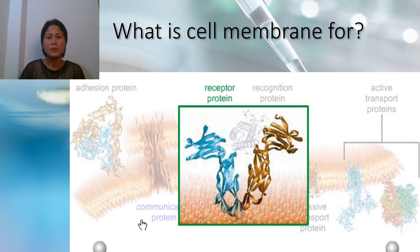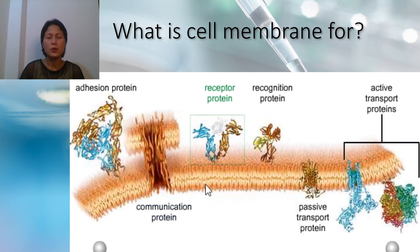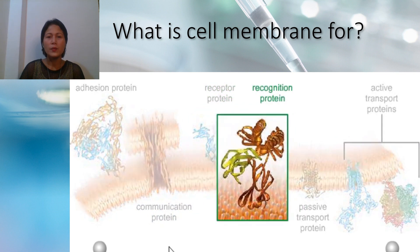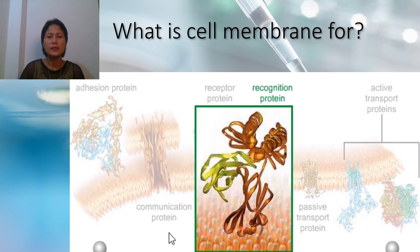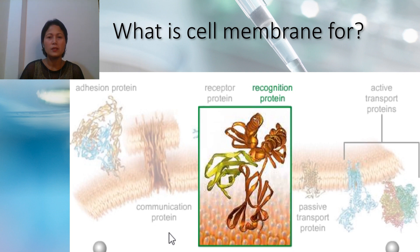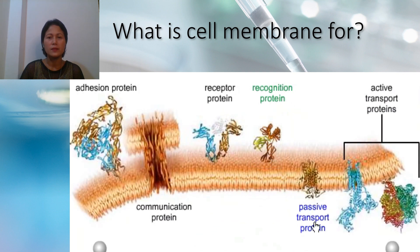Receptor proteins embedded in the membrane act as receptors for diverse hormones and other signals. This is the ribbon model of a receptor protein for somatotropin, or growth hormone. Recognition proteins are identity tags by which cells recognize self and non-self. They are glycoproteins with side sugar chains projecting above the membrane. Examples shown here are models of identity tags of red blood cells.